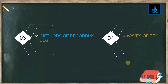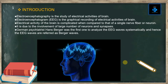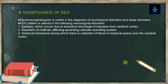Electroencephalography is the study of electrical activities of the brain. Electroencephalogram is the graphical recording of electrical activities of the brain. Electrical activity of the brain is complicated compared to that of a single nerve fiber or neuron, due to the involvement of a large number of neurons and synapses. German psychiatrist Hans Berger was the first to analyze EEG waves systematically, and hence EEG waves are referred to as Berger waves.